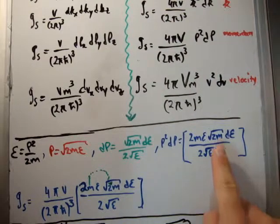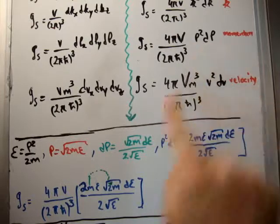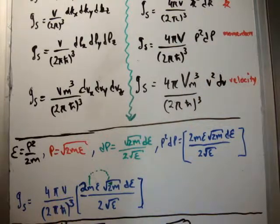Next, what I'm going to do is pick this expression and plug it in up here. And that's it here. So you have 4π times the volume in real space, divided by 2π h-bar cubed, and then this p squared dp term.